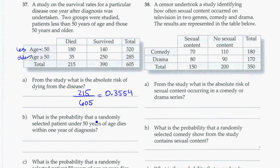So part B, what is the probability that a randomly selected patient under 50 years of age dies within one year of diagnosis? So under 50, and here we're saying that a randomly selected patient who is under 50. So this is the out of. And this is basically saying what's the risk of somebody who's under 50 dying from this disease?